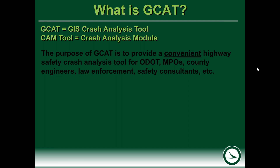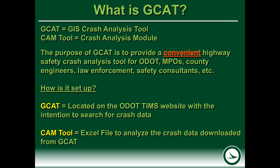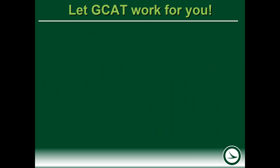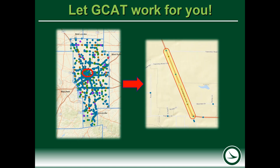The purpose of GCAT is to provide a convenient highway safety crash analysis tool for ODOT, MPOs, County Engineers, Law Enforcement Safety Consultants, and anyone else who uses crash data in their day-to-day lives. GCAT is located on our ODOT TIMSS website — I'll show you how to access that. The CAM Tool is also available there and on our HSIP website, which is the Highway Safety Improvement Program. Once we get into GCAT, this is what it's going to look like, especially in the map viewer. We are going to be able to select different data values for whatever you're looking to do and pop it up in a map.